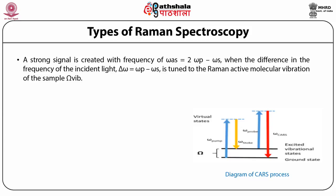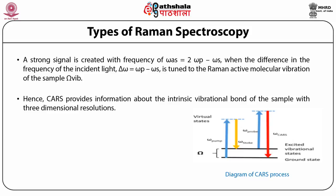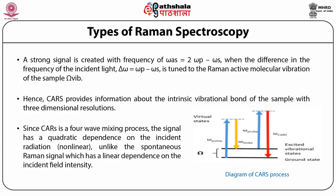When the frequency difference delta omega, equal to omega p minus omega s, is tuned to the Raman active molecular vibration of the sample (omega vibration), CARS provides information about the intrinsic vibrational bond of the sample with three-dimensional resolution. Since CARS is a four-wave mixing process, the signal has a quadratic dependence on the incident radiation, unlike the spontaneous Raman signal which has linear dependence on the incident field intensity. Figure 5 indicates the diagram of CARS energy levels.